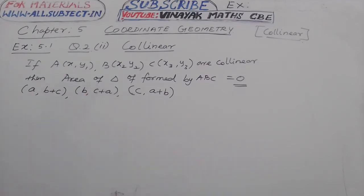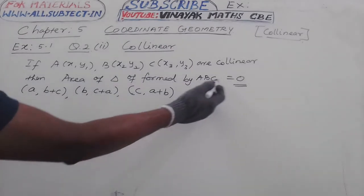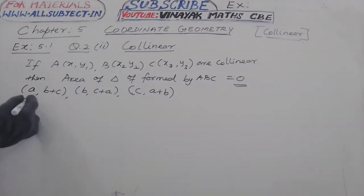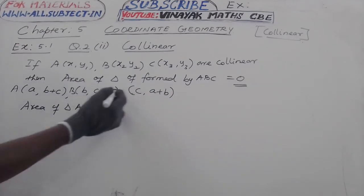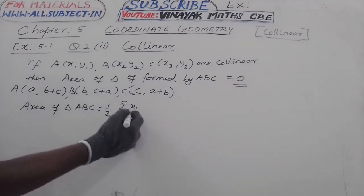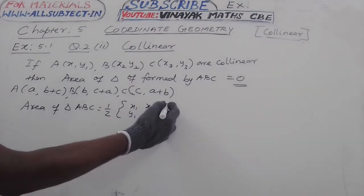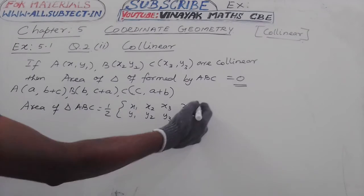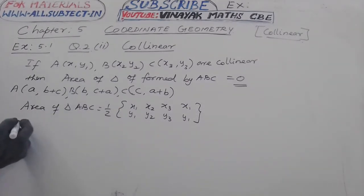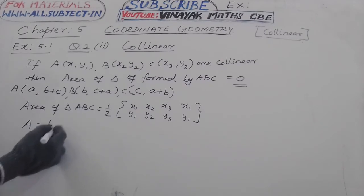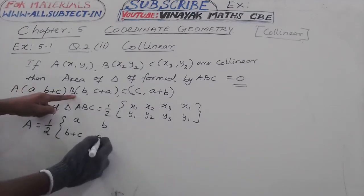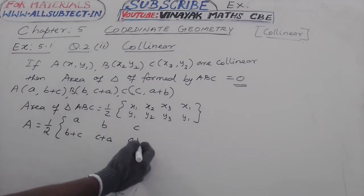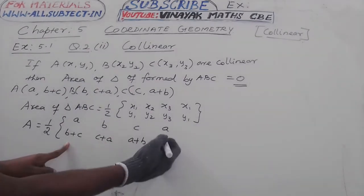For the general case with variables: x1, y1, x2, y2, x3, y3, again x1, y1. Now, area of triangle A equals half of, writing the points A (B+C), B (C+A), then C (A+B), again write the first point A (B+C).